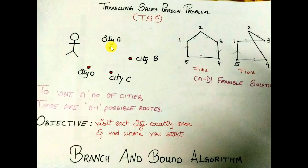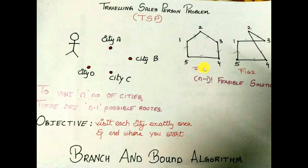In this example there are five cities. The salesman wants to travel all the cities — he can follow any route, either figure one or figure two, or any other route of his own choice. So we can say that for n number of cities we can have n minus 1 factorial feasible solutions.